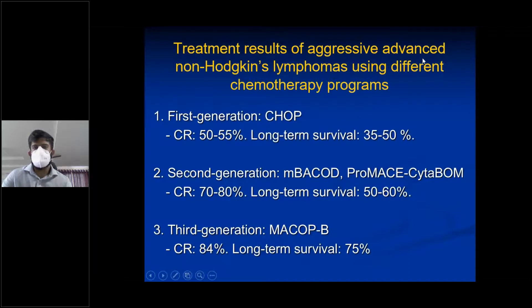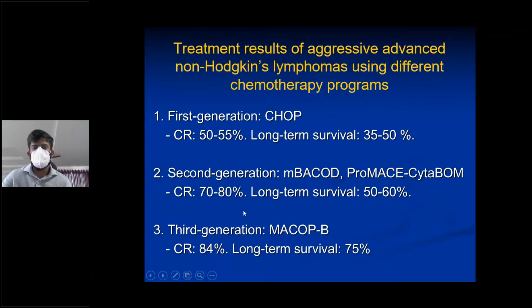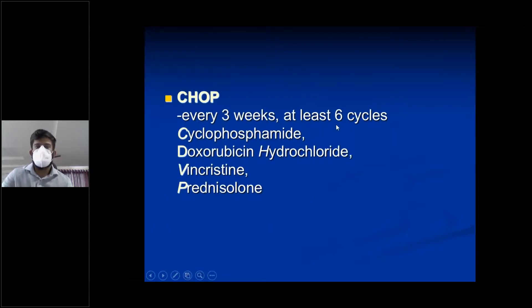Treatment results for aggressive advanced non-Hodgkin's lymphomas using different chemotherapy programs: first-generation CHOP regimen gives complete remission of 50–55% and long-term survival of 35–50%. Second- and third-generation regimens give higher complete remission and long-term survival. MECOP-B, along with novamycin, has the most chances of long-term survival. CHOP regimen is given every 3 weeks for at least 6 cycles: cyclophosphamide, doxorubicin hydrochloride, vincristine (Oncovin), and prednisolone.